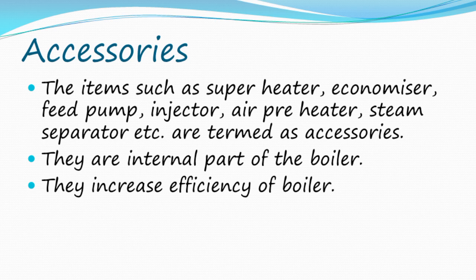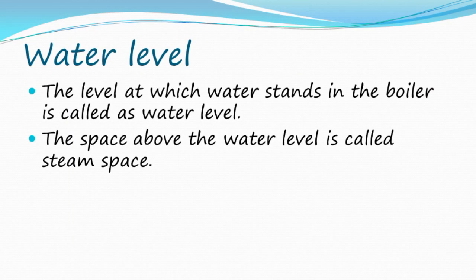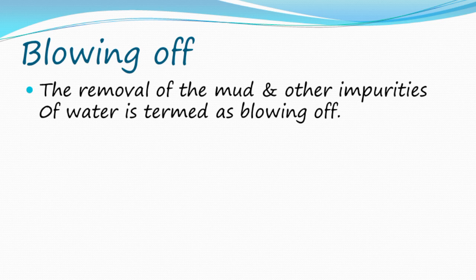Accessories include items such as superheater, economizer, feed pump, injector, air preheater, steam separator, etc. They are internal parts of the boiler and they increase the efficiency of the boiler. The water level is the level at which water stands in the boiler; the space above the water level is called steam space. Blowing off refers to the removal of mud and other impurities from water.